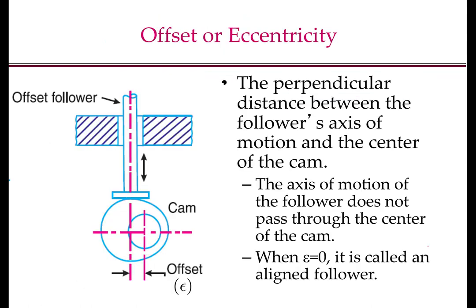The offset or eccentricity is the perpendicular distance between the follower's axis of motion and the center of the cam, denoted by epsilon. When epsilon equals zero, we call the follower an aligned follower. When there is a non-zero epsilon, we call it an offset follower. You should remember these two terms: offset follower and aligned follower.